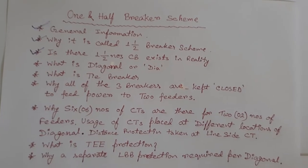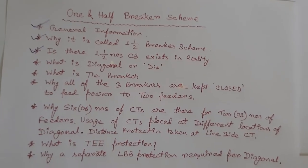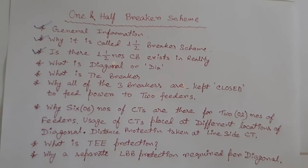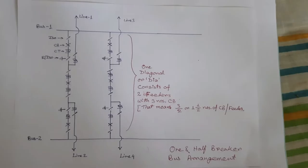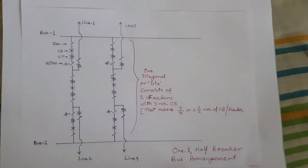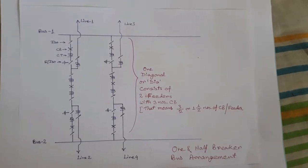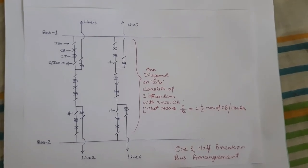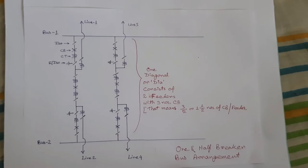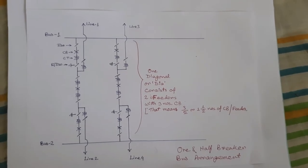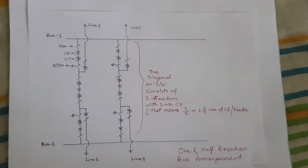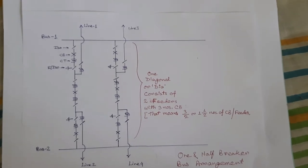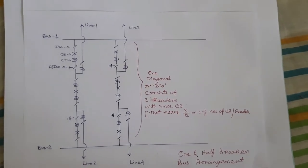But is one and half, or 1.5, circuit breakers possible in reality? Actually, one and half circuit breakers is not physically possible, but economically it is possible — we are spending the cost of one and half circuit breakers per feeder.